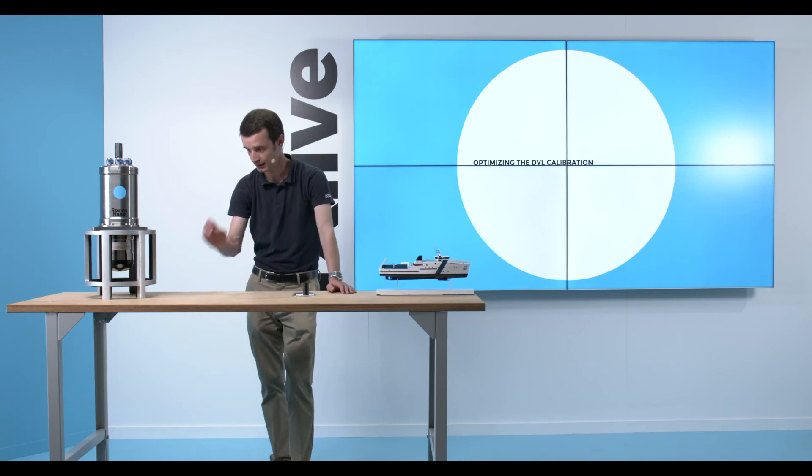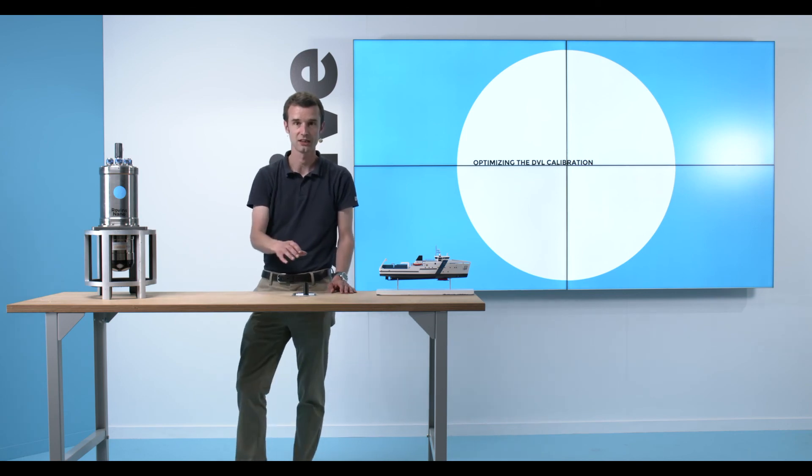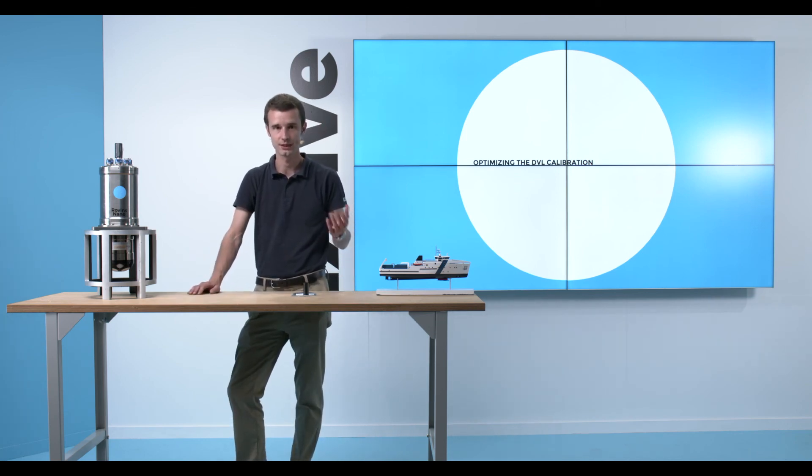The last thing you can do to improve your DVL calibration would be to continue your calibration line further. We give you some visual markers and also documented in our technical documentation. That's when it will change from orange to blue. We say the calibration value is stable.